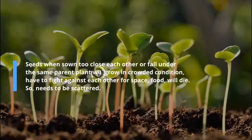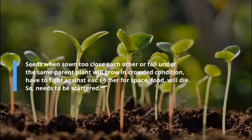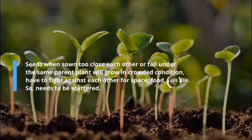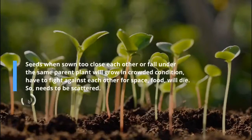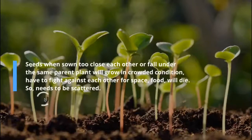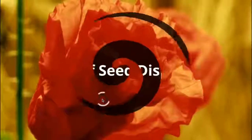Why is there a need for the dispersal of seeds? Seeds, when sown too close to each other or falling under the same parent plant, will grow in a crowded condition. So they have to fight against each other for space and food, and will eventually die. So they need to be scattered.